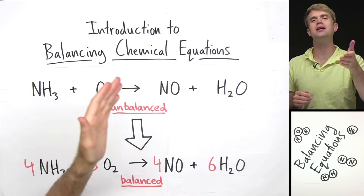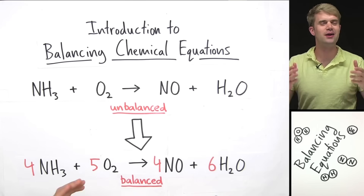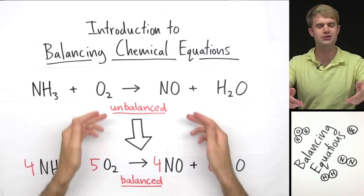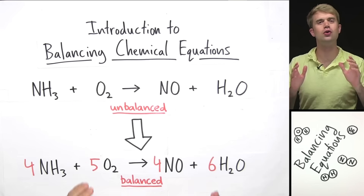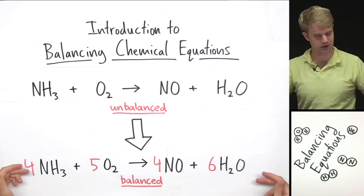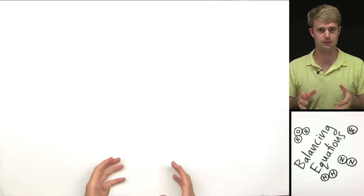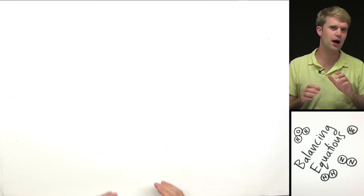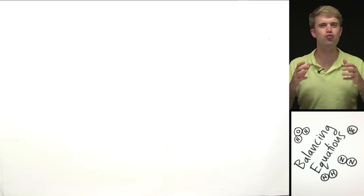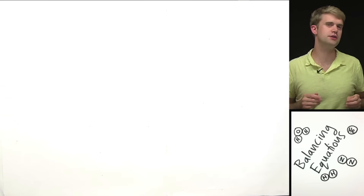This is an introduction to balancing chemical equations. We're going to talk about what it means for an equation to be unbalanced or balanced, and then we'll learn the process that you go through to balance a chemical equation. I want to start with a few examples that show the concepts behind balancing equations so you can really understand what's going on when you work through these kinds of problems.